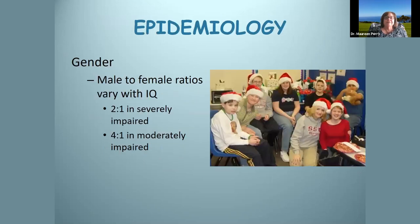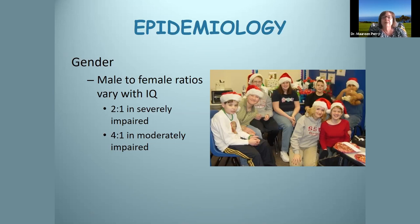When we look at epidemiology, male-to-female ratios vary with IQ. In the moderately impaired, it's four to one — many more boys than girls with autism. We see at least twice as many boys among the severely impaired. There's also a picture here of children at Christmas, some looking very happy about the festivities and some who clearly couldn't care less and don't want to be around — perhaps too many people.